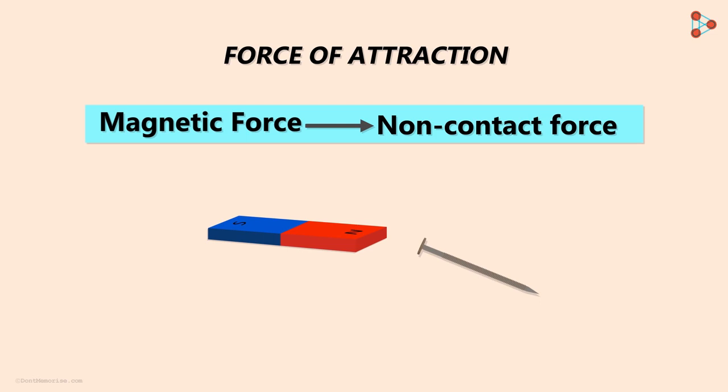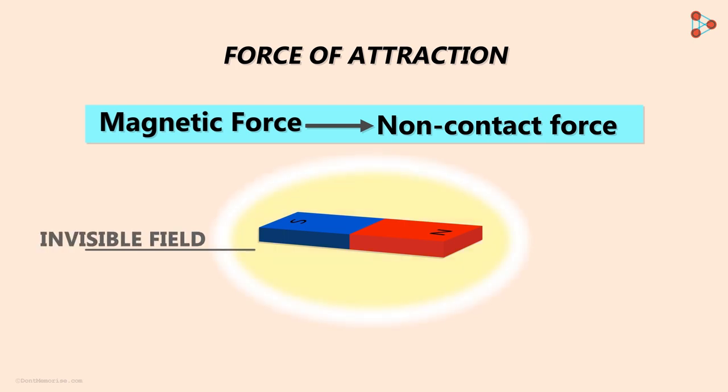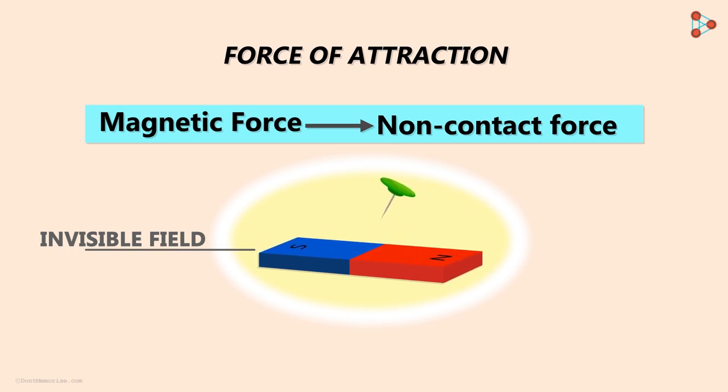But what does this non-contact nature of the magnetic force tell us? It tells us that there is an invisible field produced by the magnet in the space around it. And if you bring any ferromagnetic material in this field, then it experiences that force of attraction.